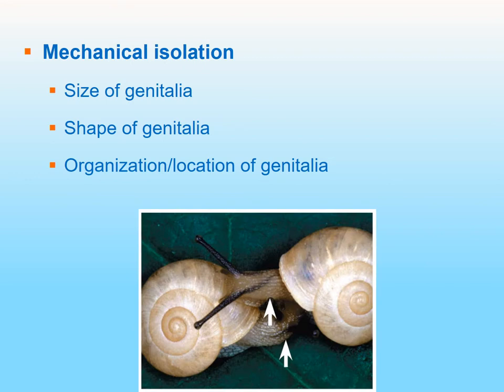Mechanical isolation involves physical or morphological differences that prevent mating. It could be related to the size, shape, or organization of the genitalia. Here's an example: two snail species have opposite orientations of their shells, so the way they're oriented, they cannot attempt to mate — their genitalia are not going to be able to come together.